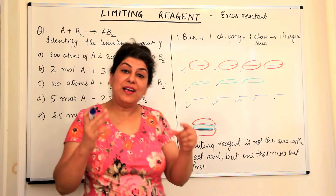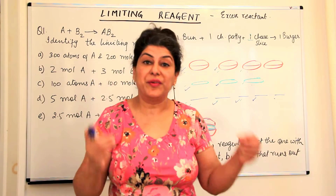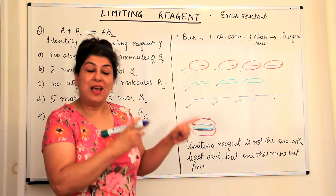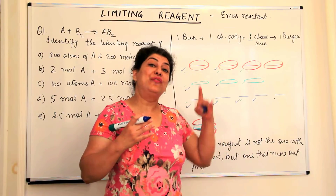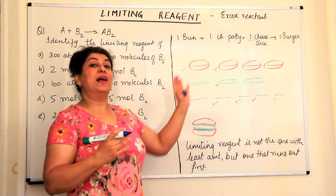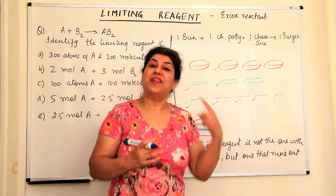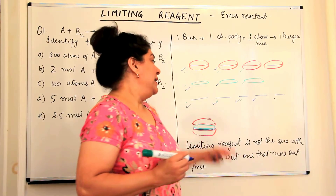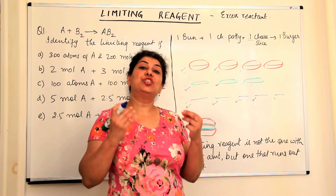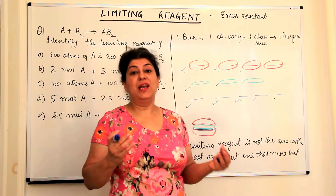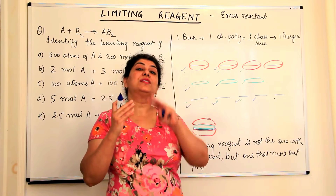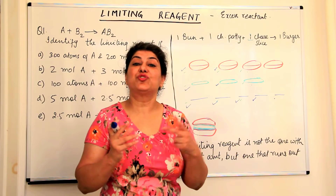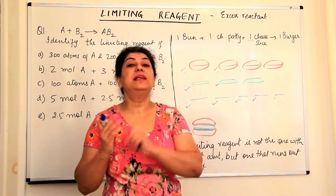Remember: when you are trying to find the limiting reagent in a chemical reaction, it is not the one with the least amount that is the limiting reagent, but the one that runs out in the reaction first. Like the cheese slices — although they were the largest in number, it was the cheese slices that ran out, and therefore they became the limiting reagent. The limiting reagent causes the reaction to cease. Although you may have other reactants remaining, the reaction does not take place further because of that one limiting reagent.